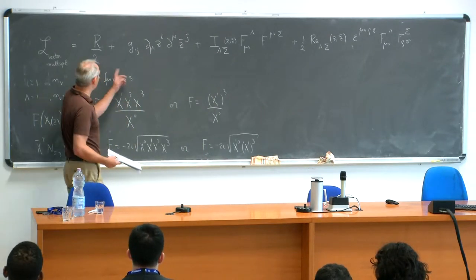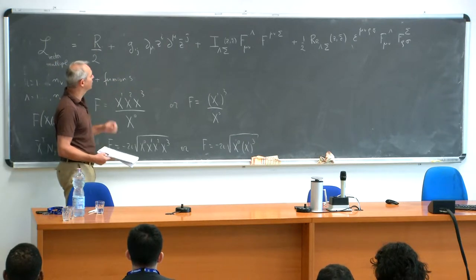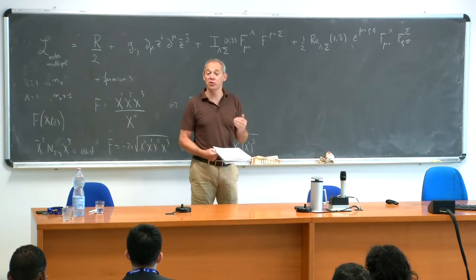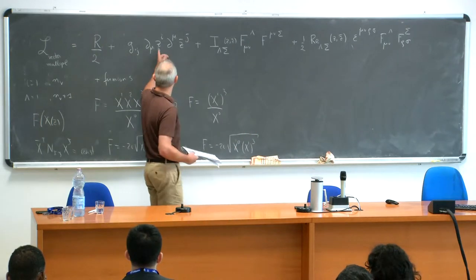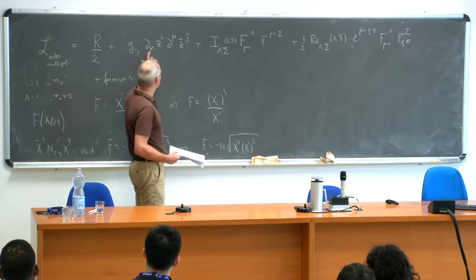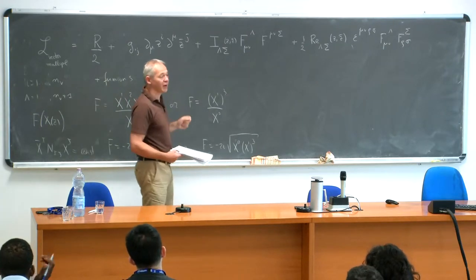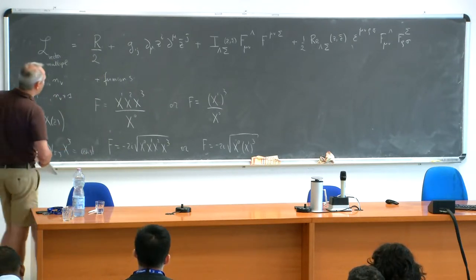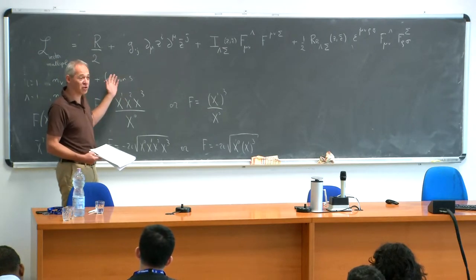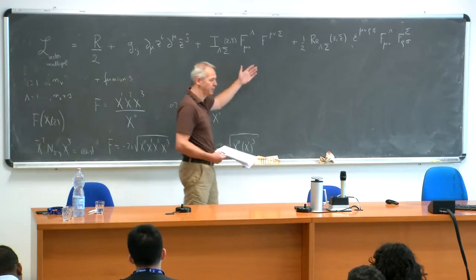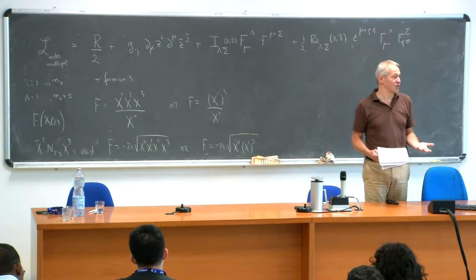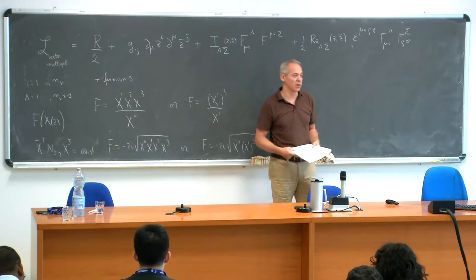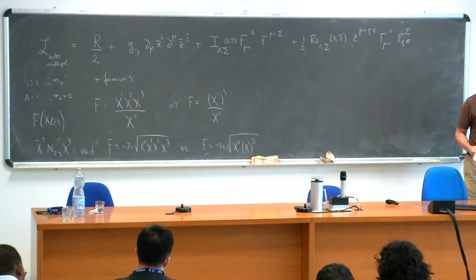The choice of prepotential basically determines the entire Lagrangian. We also have gravitini and gaugini here. A natural question that comes to mind is: we have gauge fields, but nothing seems to be charged under them — all the fields are neutral. The scalar fields have just a flat derivative; there's no connection. The kinetic terms for the gravitino and gaugino are also not charged. So the question is: can we make some of these fields charged under the U(1)s available? And the answer is yes. In essence, that is what gauged supergravity is.